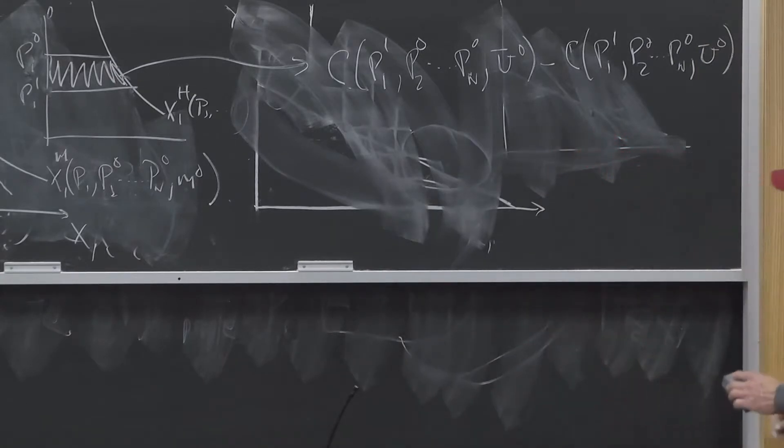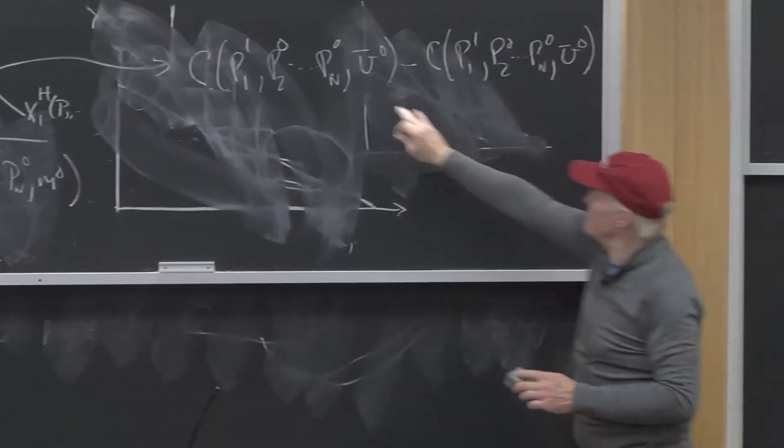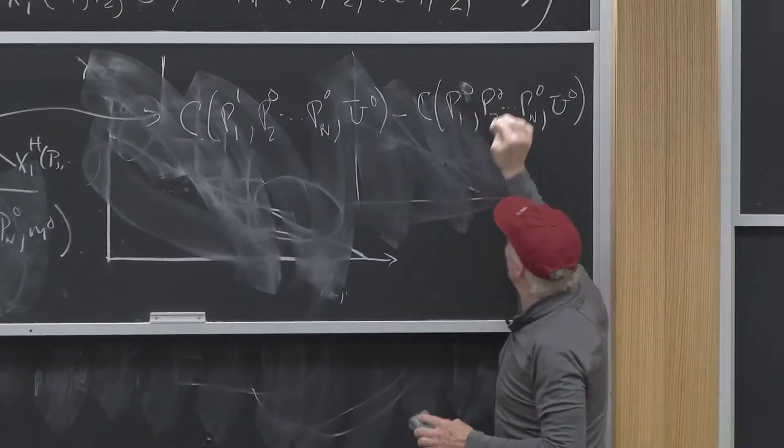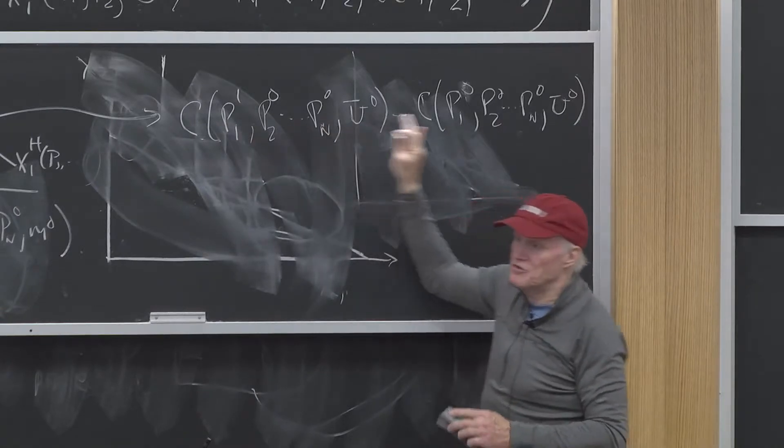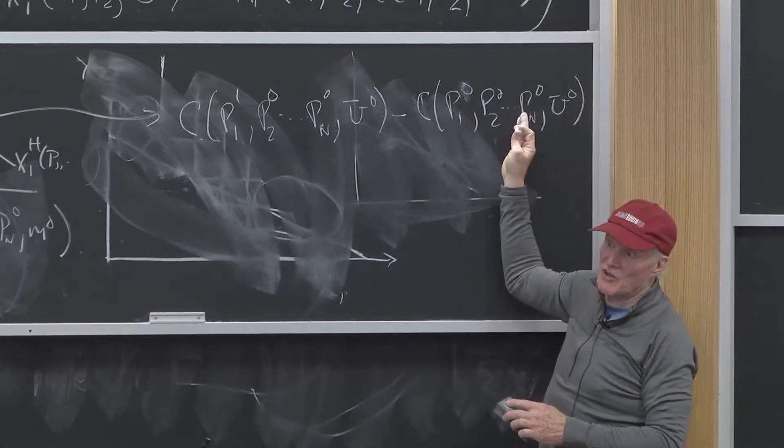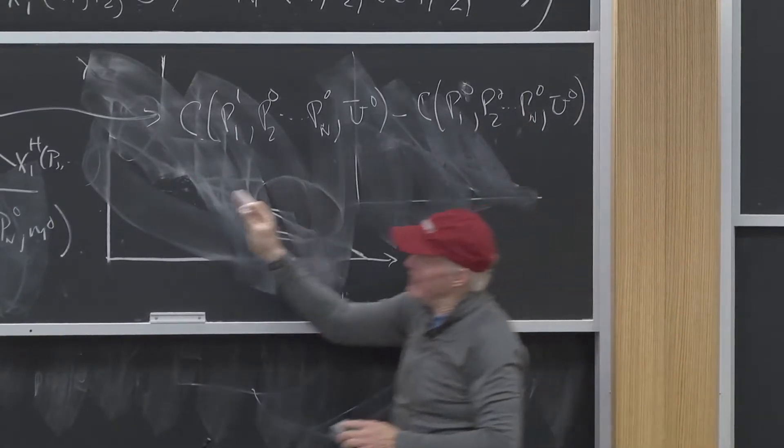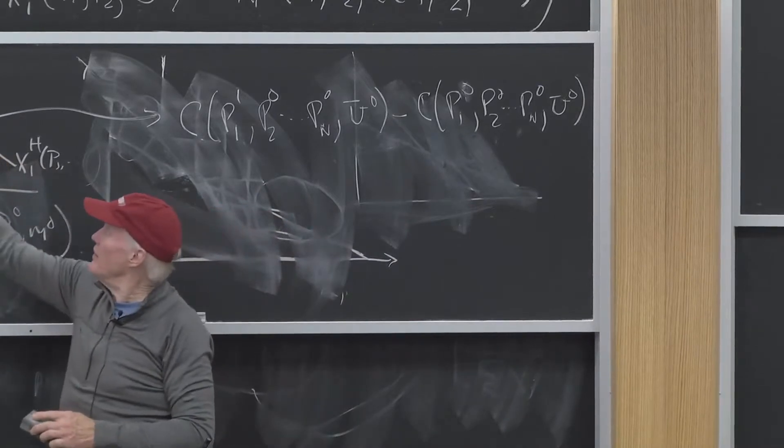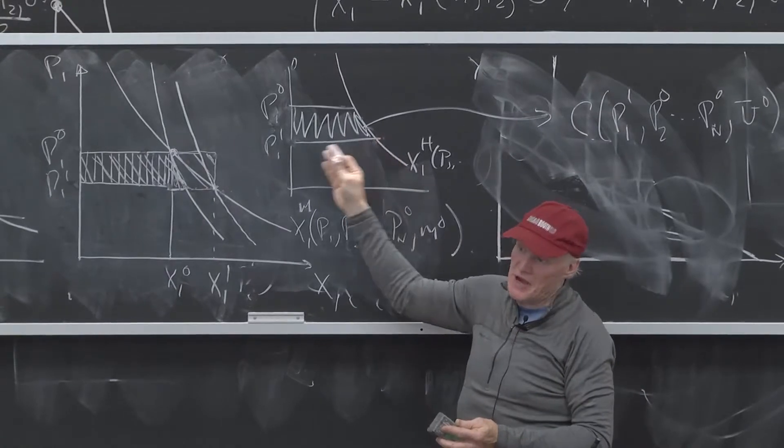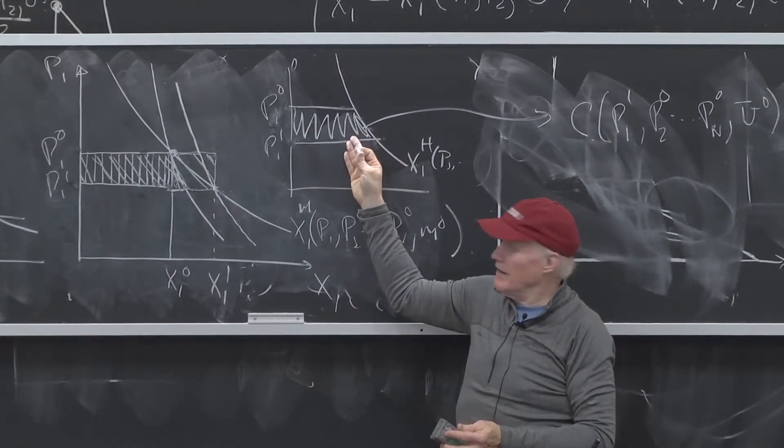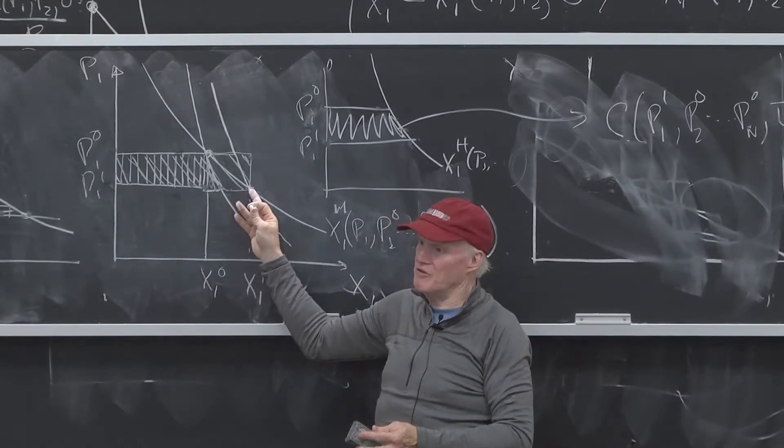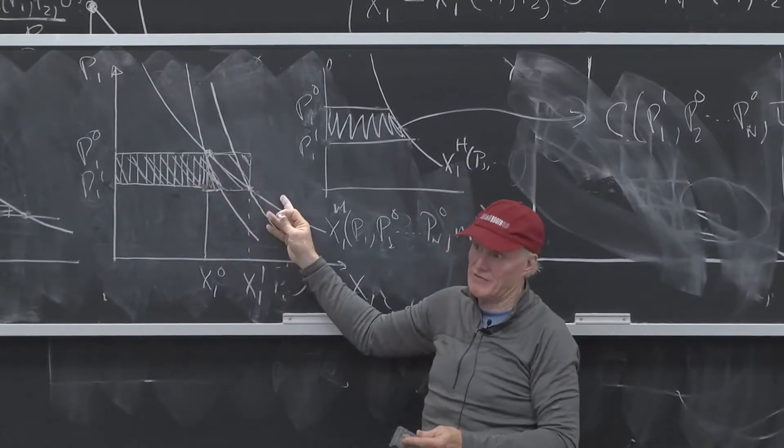That is, that area to the left would just be the difference in cost at those two prices. And we know this is a perfect measure of the change in the cost of living, and that's why the area to the left of a Hicksian demand curve is a measure of the change in the cost of living. And depending on which Hicksian demand curve I'm using, I'm either fixing the level of utility at the initial level of utility or at the ending level of utility.